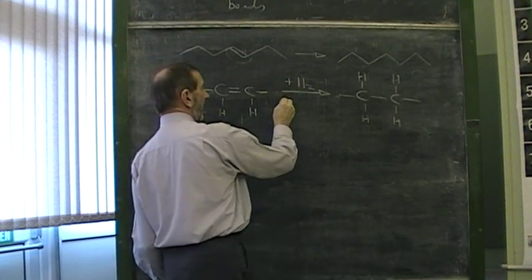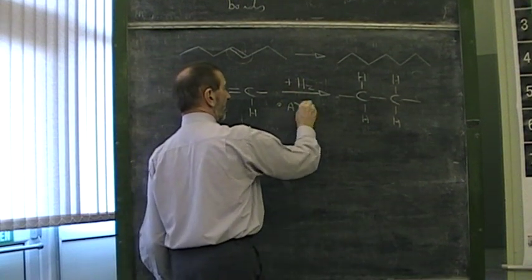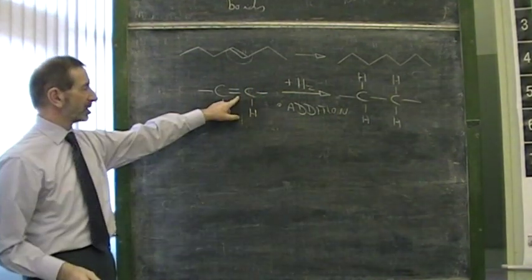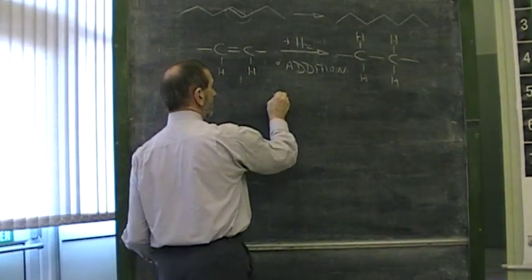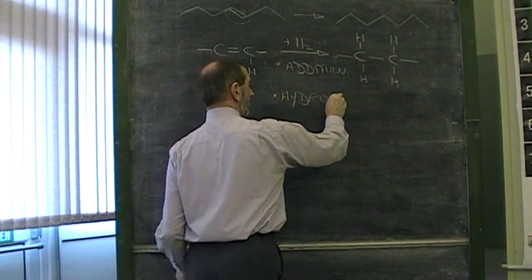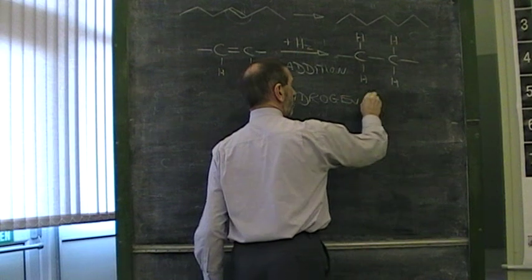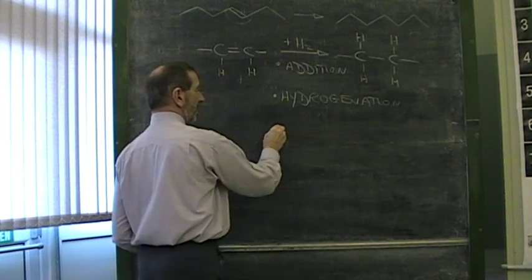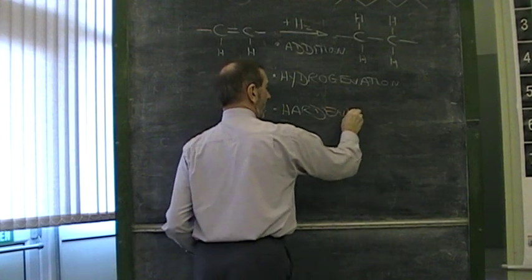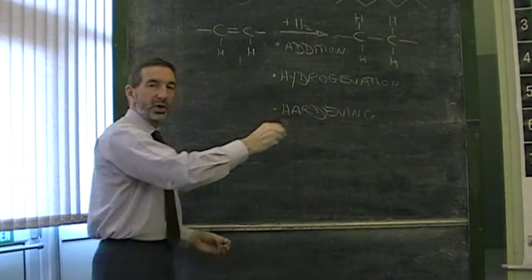There are names for this process. I guess we could call it an addition reaction. That, after all, is what we call adding something across a double bond. Adding hydrogen can be called hydrogenation. And there's one other expression that's used here, and that's hardening. Because we've gone from liquid to solid.